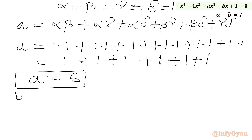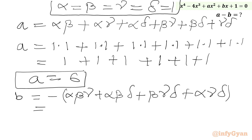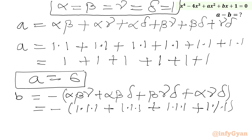Now we calculate B. B is the sum of roots taken 3 at a time with a negative sign: minus of (alpha·beta·gamma plus alpha·beta·delta plus beta·gamma·delta plus alpha·gamma·delta). Plugging in all values equal to 1, we get minus of (1+1+1+1), so B equals minus 4.